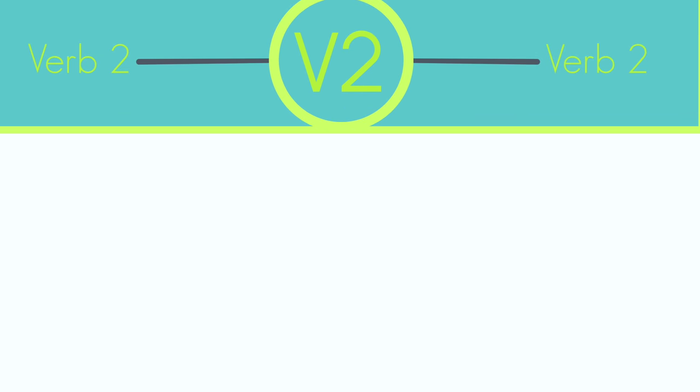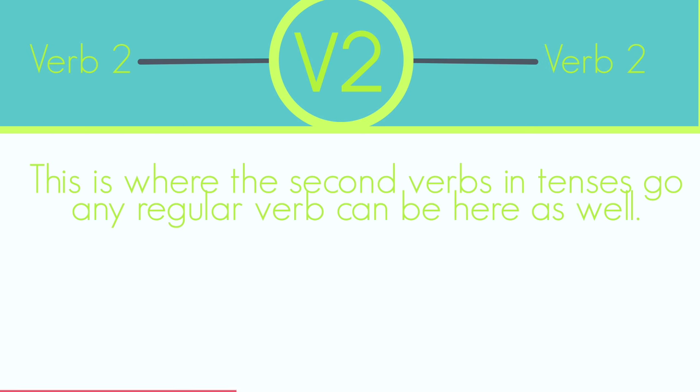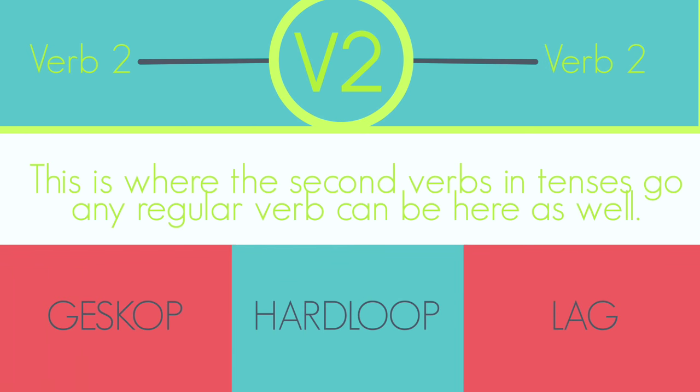The second verb comes next. This is where you add all of your GE-HET in the past tense, and where the second verb in the future tense can come. The second verb can also be any regular verb as well.